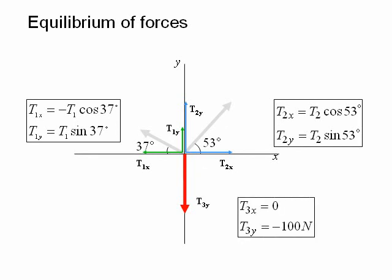T3x equals zero because T3 has no horizontal component. T3y is equal to minus 100 newtons. Again, notice the minus sign because T3y is acting vertically downwards along the negative y-axis.